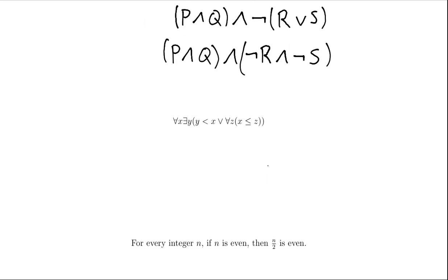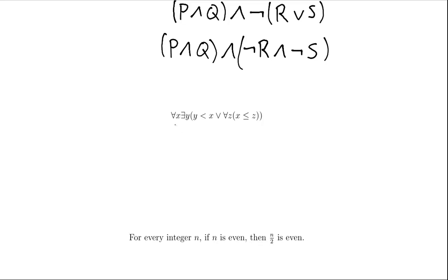Let's look at one now that has quantifiers. Here we are looking at: for all X, there is a Y such that Y is less than X, or for every Z, X is less than or equal to Z. Again, the negation of this is simply the negation placed in front of that statement. Now let's simplify — we need to pass the negation past the quantifiers. When you do that, the quantifiers switch. So we will have: there is an X such that for all Y, and then the negation of the thing being quantified.